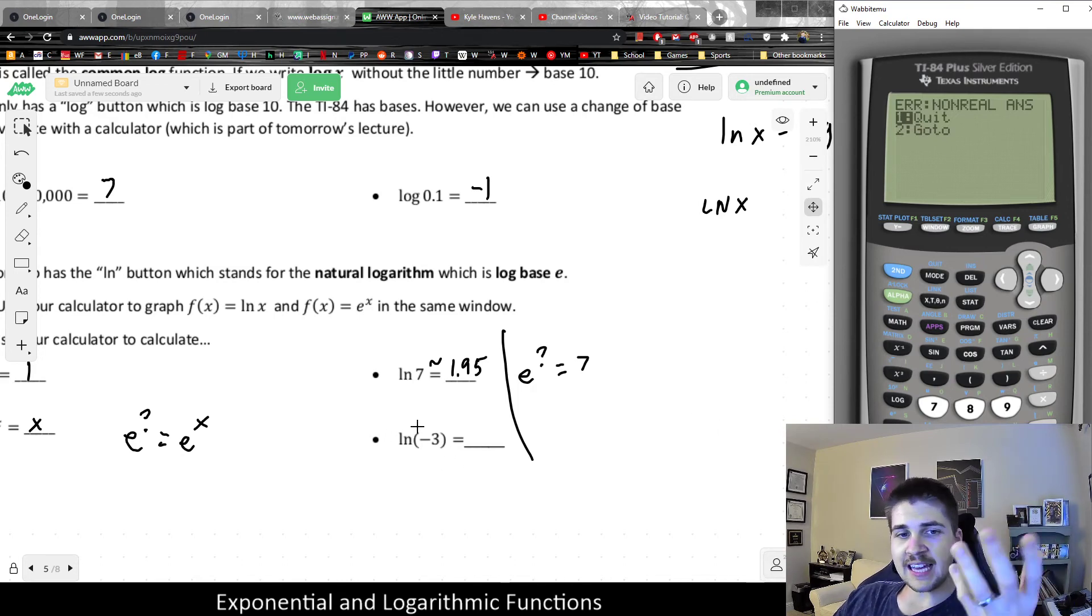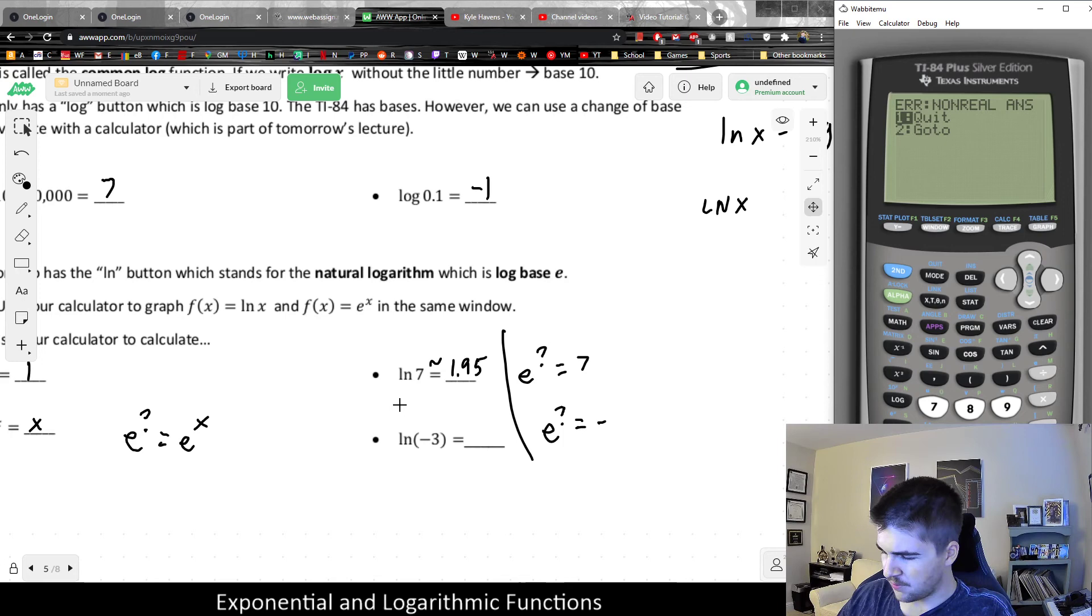When you're trying to take a logarithm of a negative, there's not going to be a real solution, because this would imply e to what power makes negative 3. But when we talked about exponential functions in the last few videos, I mentioned that exponentials can never make negatives, because this just means repeated multiplication. If you're multiplying by a positive number, it's never going to be negative. And same goes for 0, so basically what we end up with is not a real number.